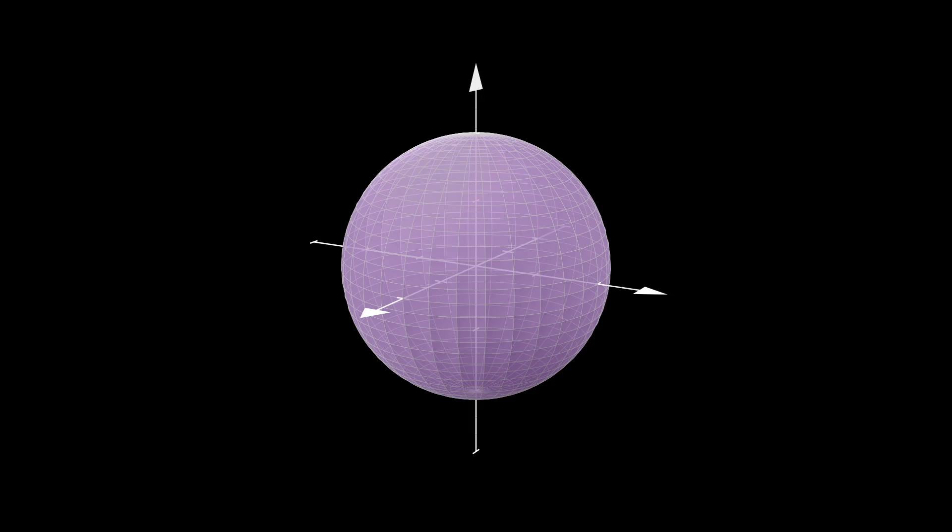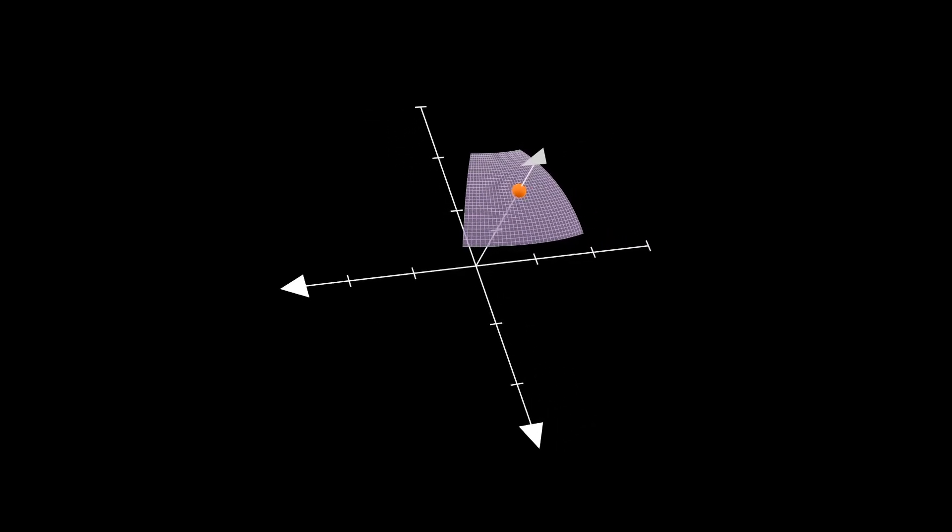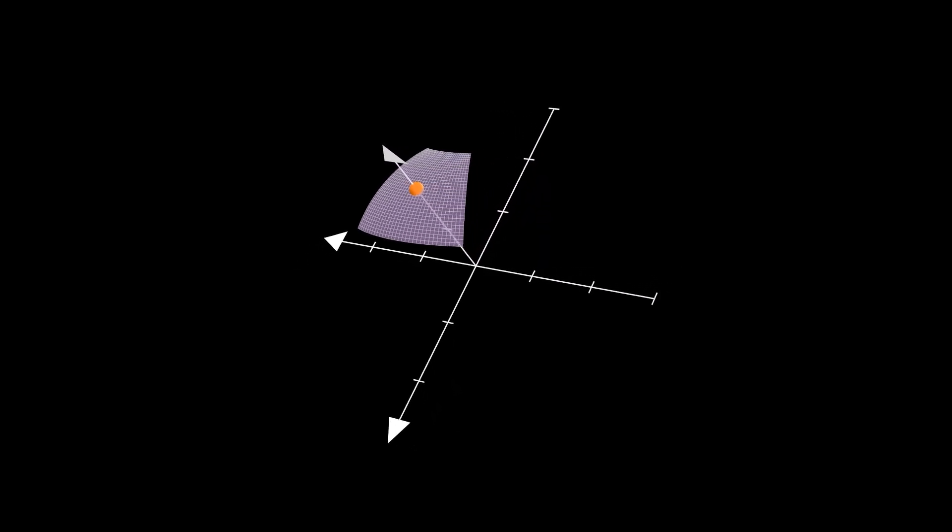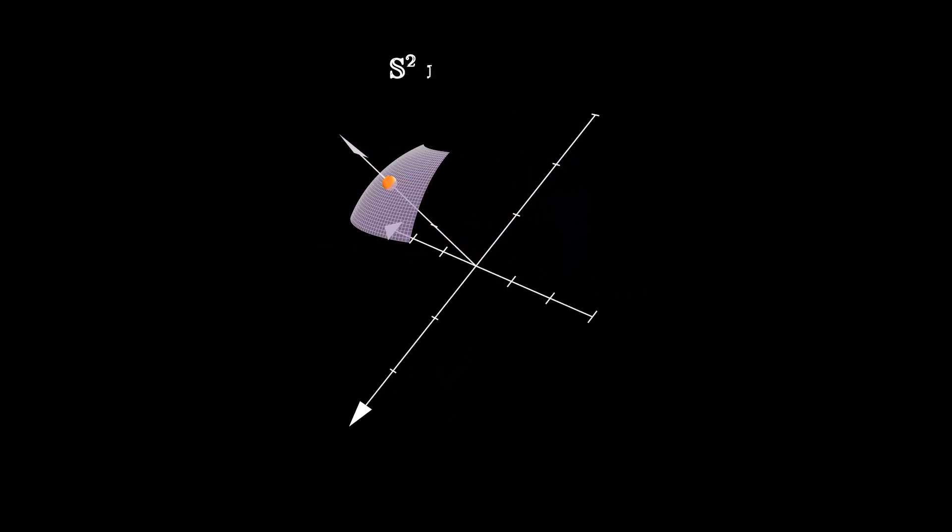A more interesting example is the unit sphere. It is certainly not the graph of a smooth function with respect to any coordinate system, but for any p in sigma, there is a portion of the sphere containing p that is the graph of a smooth function with respect to an appropriate coordinate system. This means that the unit sphere is a smooth surface.